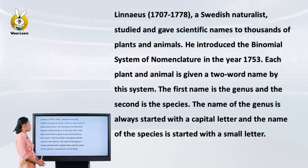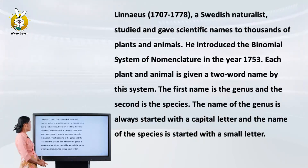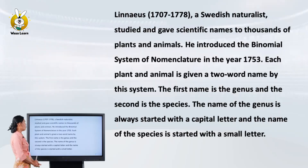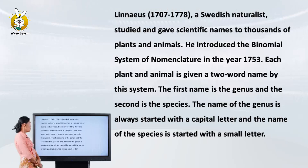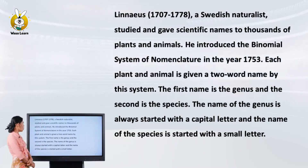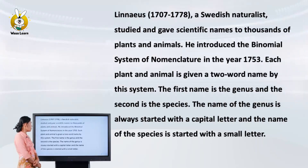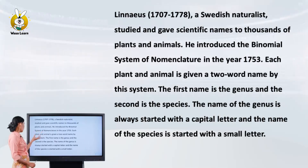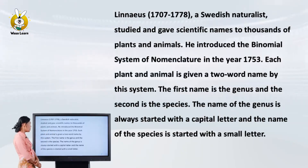Linnaeus, 1707 to 1778, a Swedish naturalist, studied and gave scientific names to thousands of plants and animals. He introduced the binomial system of nomenclature in the year 1753. Each plant and animal is given a two-word name by this system. The first name is the genus, and the second is the species.